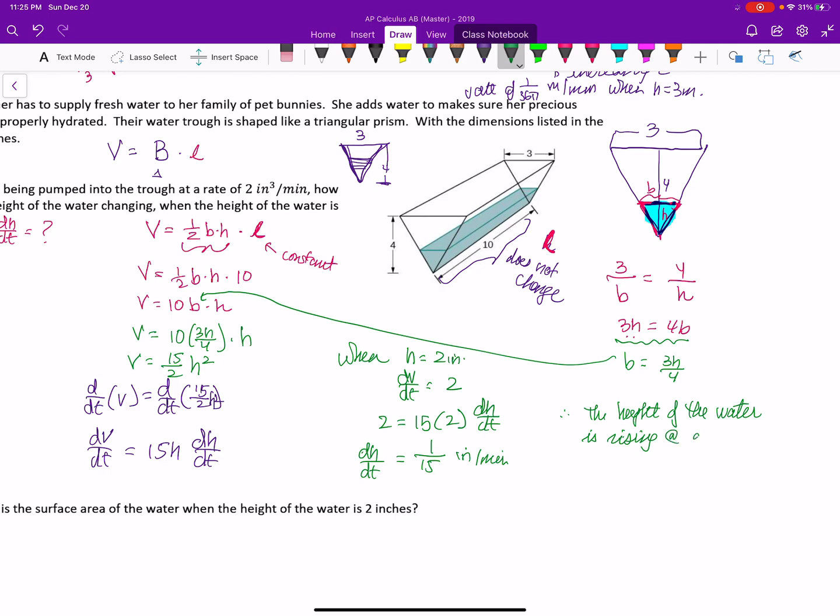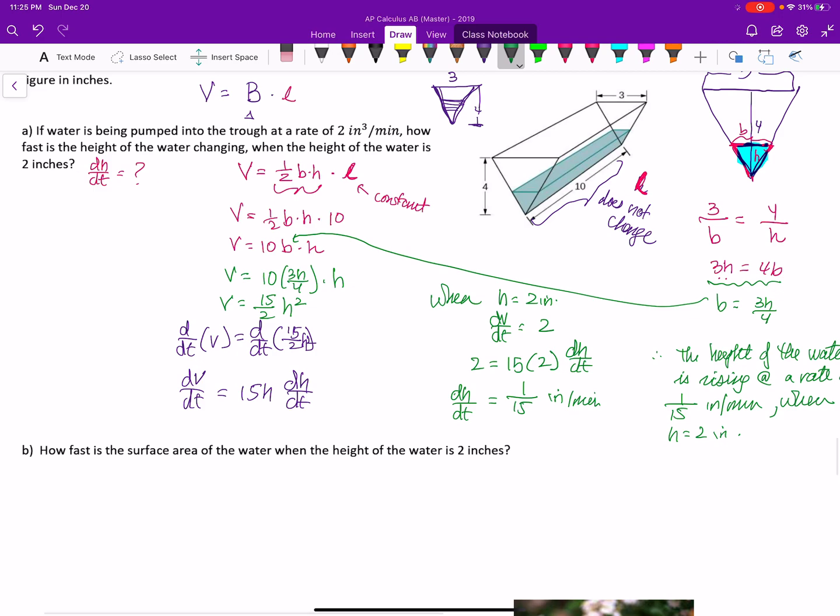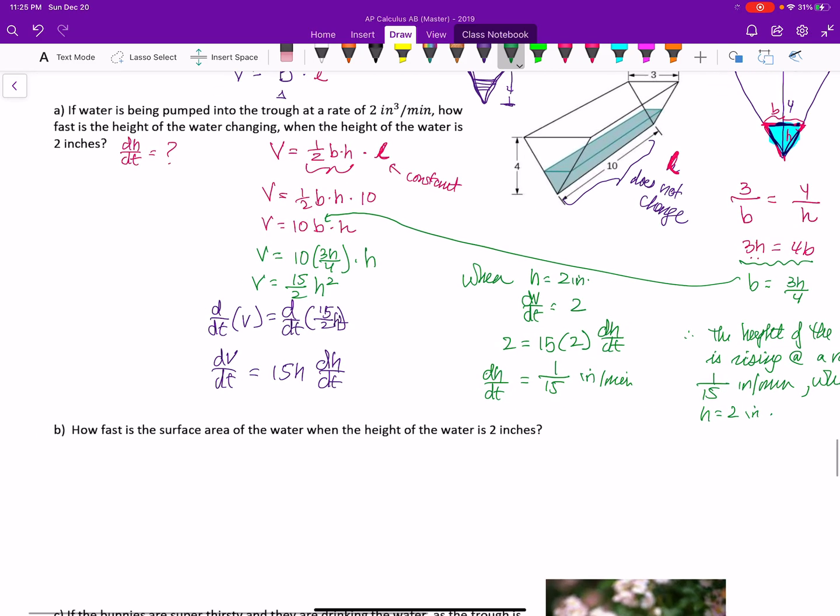Therefore, the height of the water, or you could say the water level, is rising at a rate of 1 over 15 inches per minute when H is equal to 2 inches. Because it changes. As the water fills further and further up, it'll slow down because it has to fill out more surface area as it's going up.